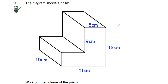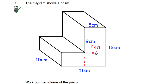Let's look at question number 3. We've got an L-shaped prism again, and we've been asked to work out the volume. To get the volume, we need to find the area of the cross-section — the front of the shape — and then multiply by 15. I'm going to chop it this way. For this rectangle, we've got 5 times 12, because it's 5 wide and 12 high. 5 times 12 is equal to 60 centimetres squared.